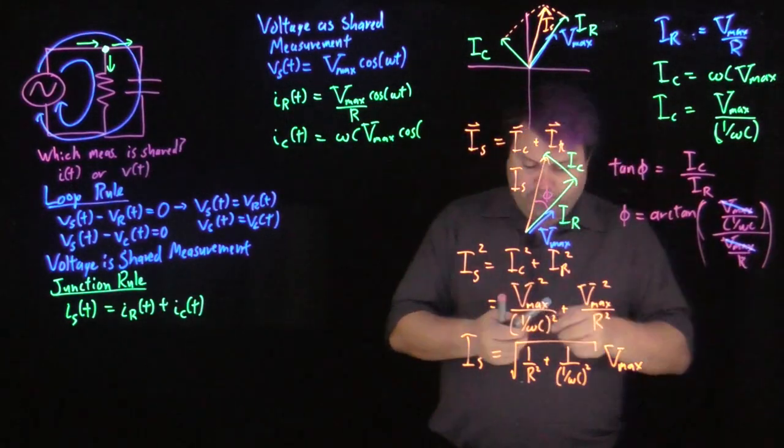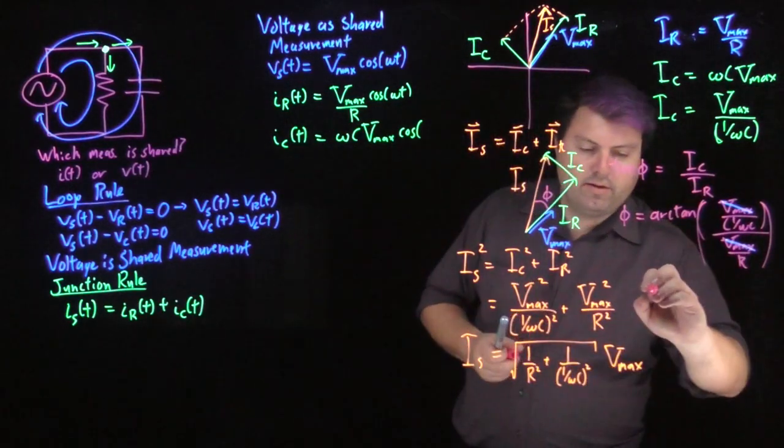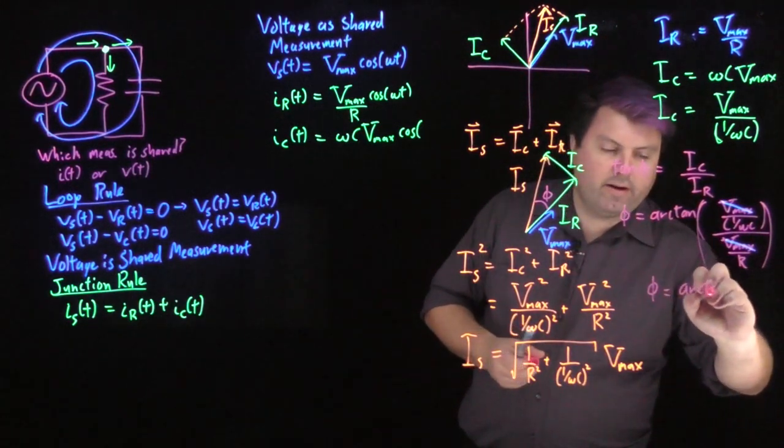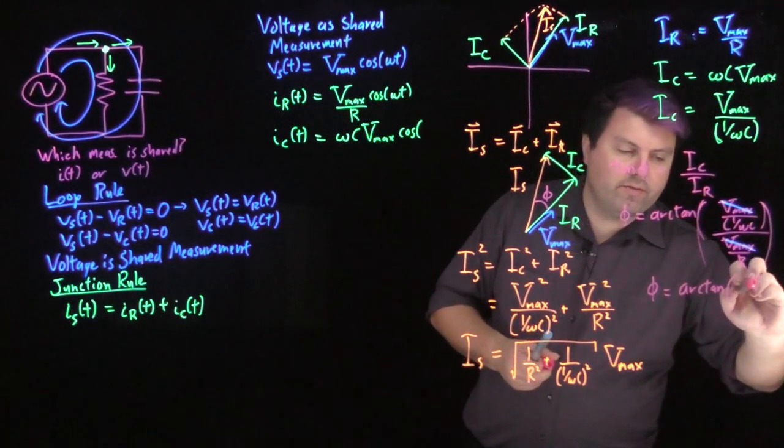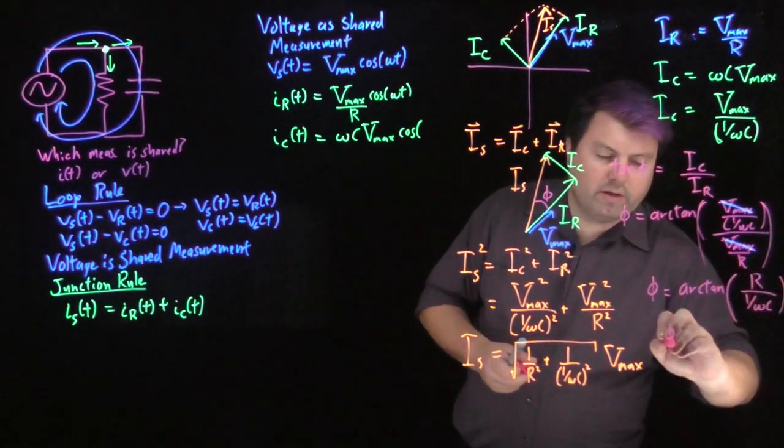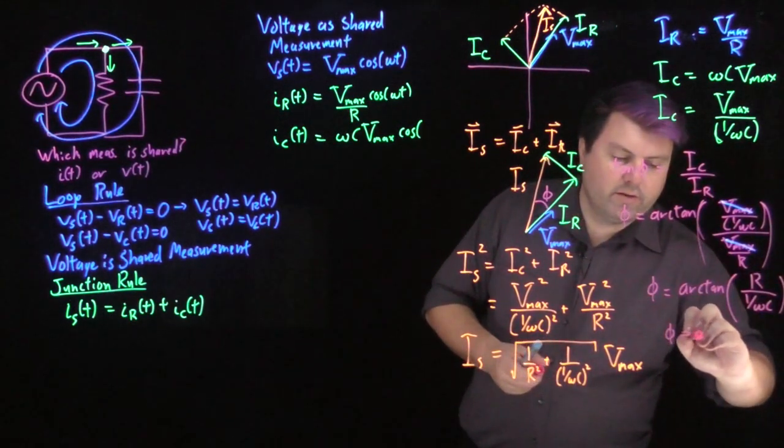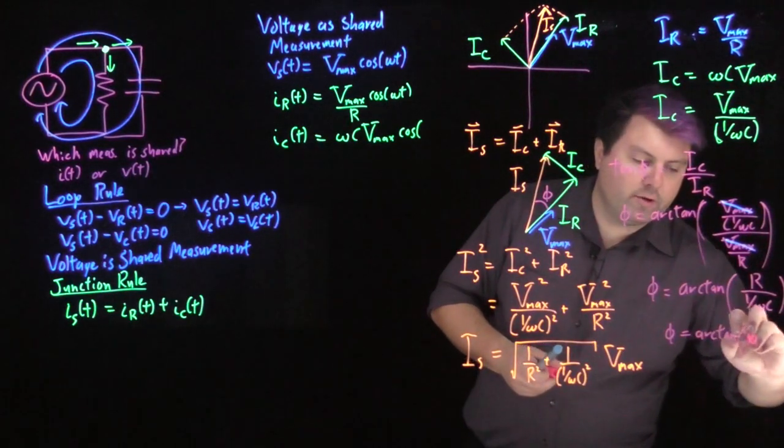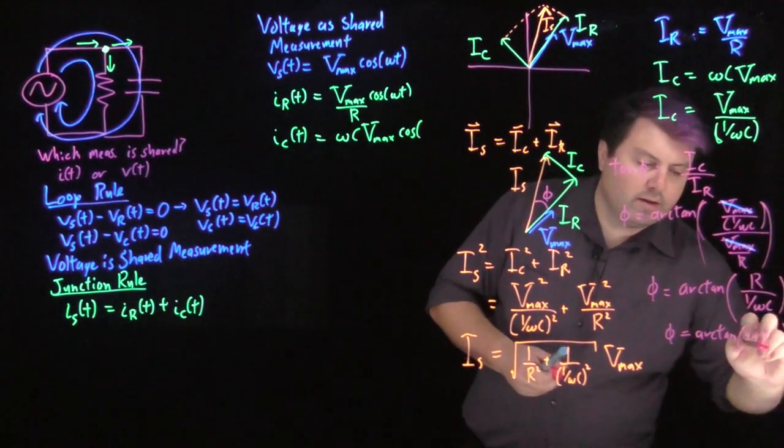And so we can write our phase angle as the arc tangent of r over one over omega c or if we want to just bring it all over, we have it as the arc tangent of omega r c.